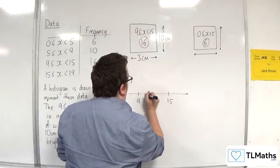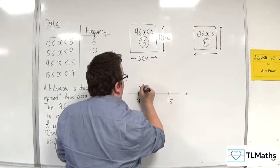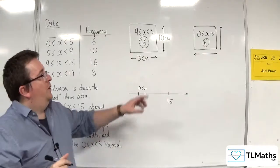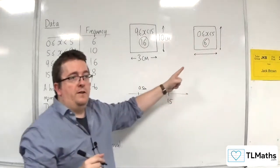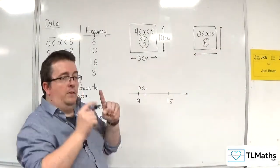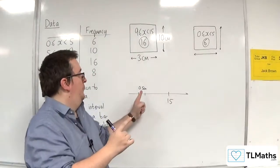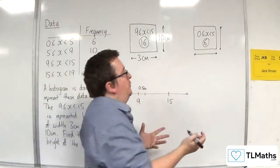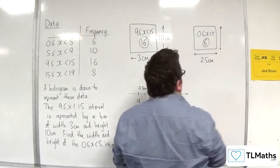So, every one along is going to be half a centimeter. So, each one along is going to be half a centimeter. So, for this one, we're going from 0 to 5. So, that means we're going 5 lots of half a centimeter.